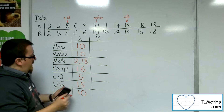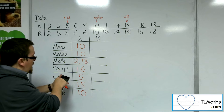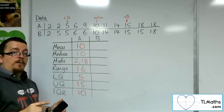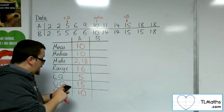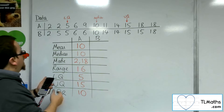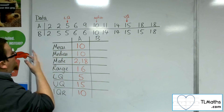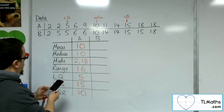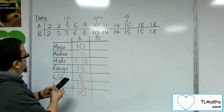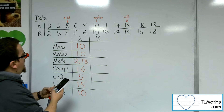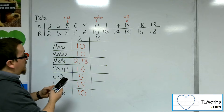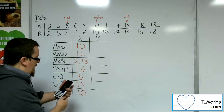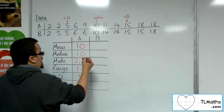Now for the second set of data — and obviously you can get the median value, quartile 1 (lower quartile), and quartile 3 (upper quartile) all from the calculator. So now we want to type in the second set of data. Go to menu, number 6, one variable again. We've got 2, 5, 5, 6, 6, 10, 14, 14, 15, 15, and 18. Then option, number 3, and we can read off the mean, which is again 10.